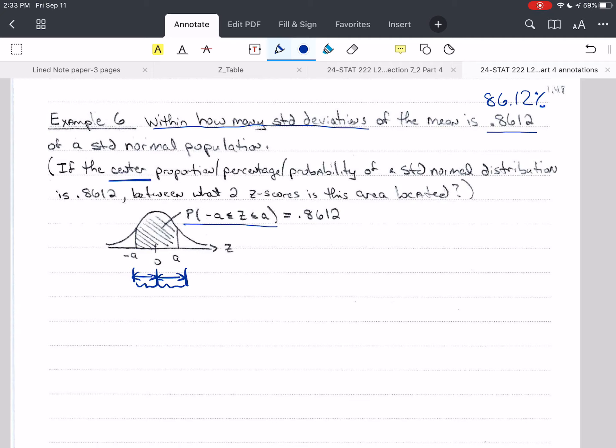So let's look at the first way that we can solve this. The first way is to think about the whole distribution. So we'd have negative a, positive a, and 0.8612 in between those values. And I'm going to think about how much is remaining or left over. So left over is 1 minus 0.8612 because the total that we have is 1 for any probability distribution.